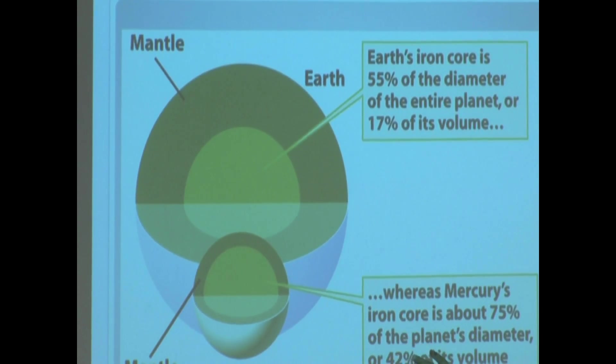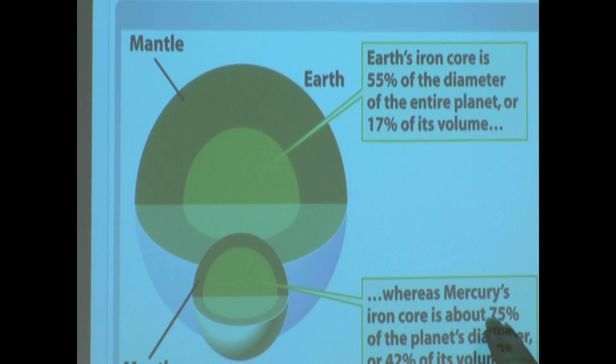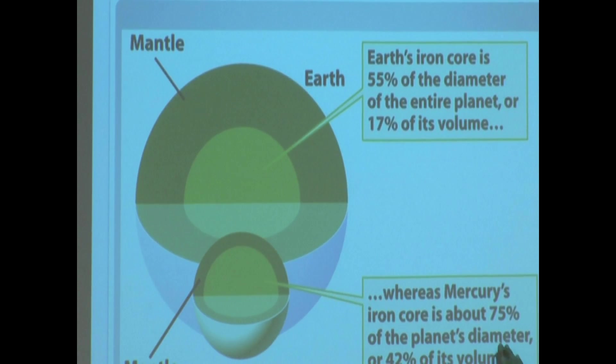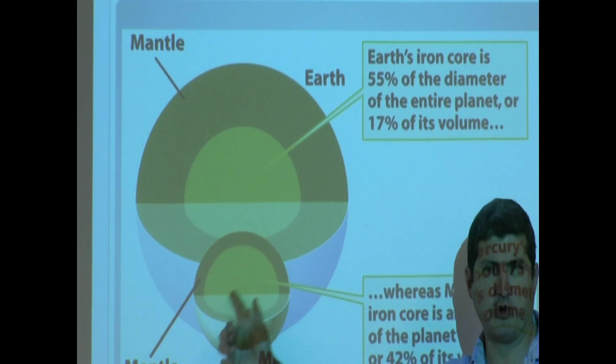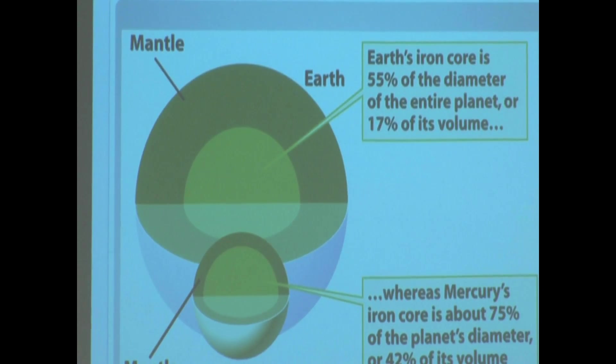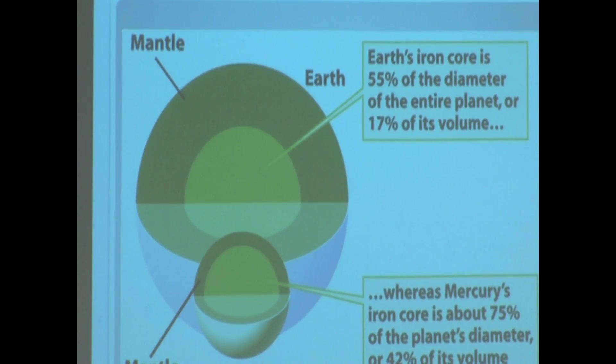For Mercury, Mercury's iron core is about 75 percent of the planet's diameter, or 42 percent of its volume. A huge portion of Mercury is the iron core, and that's why its density is very high. It's the second densest planet.